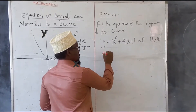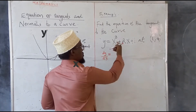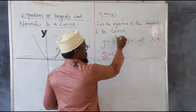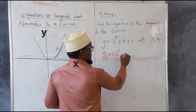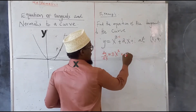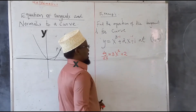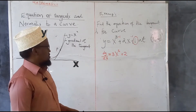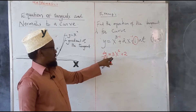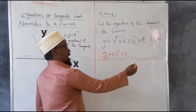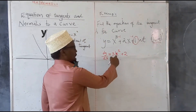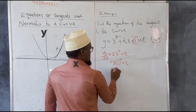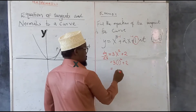Differentiating, dy/dx equals 3 times the coefficient of x cubed — which is 1 — so we get 3x squared. Then 1 times 2 gives 2, with the power becoming 0, so the derivative of 2x is 2. The derivative of the constant is 0. So the gradient function is 3x squared plus 2. At point (1, 4), x equals 1, so dy/dx equals 3 times 1 squared plus 2, which is 3 plus 2, equals 5.